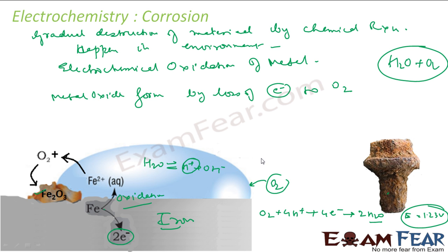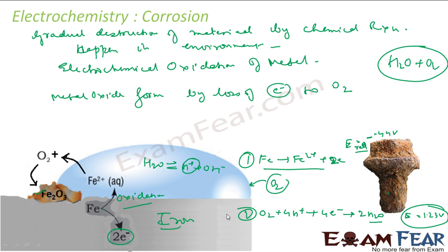If you talk about the oxidation reaction, Fe gives Fe2+ plus 2 electrons. For this, the E reduction is −0.44, but this is the oxidation reaction, so the E oxidation will be +0.44 — that means that is also a spontaneous reaction. So both reaction 1 and reaction 2 are spontaneous reactions that can happen on their own in nature. This is oxidation at anode, and this is reduction at cathode. If you add these two reactions, you will see that you are getting Fe2O3. Once you get Fe2+, you can easily get Fe2O3 when it reacts with oxygen.